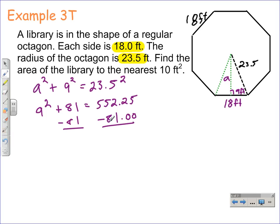We get 471.25 and take the square root of each side at this point to get a having a length of 21.7, and that would be 21.7 feet. So the apothem is 21.7.